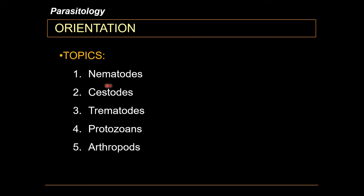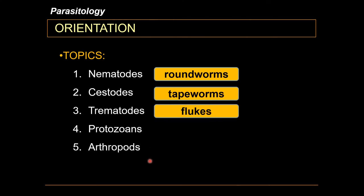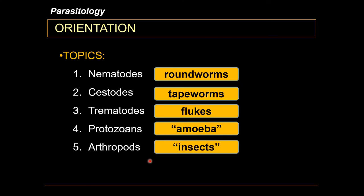Parasites are generally classified into five major classifications: nematodes, cestodes, trematodes, protozoans, and arthropods of medical importance. Nematodes are also called roundworms. Cestodes are tapeworms. Trematodes are commonly called flukes. Protozoans are the amoeba-type parasites, while arthropods are the insect-type parasites. It is important to note that cestodes and trematodes are both flatworms — cestodes are segmented flatworms, while trematodes or flukes are non-segmented flatworms.